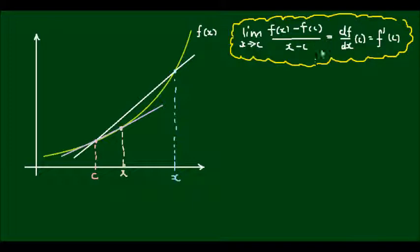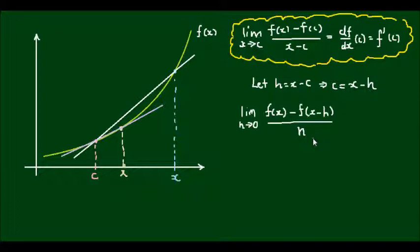I can write this in a generalized form if I substitute h equals x minus c. So let h equal x minus c. That would imply then that c equals x minus h. And if I substitute this into the above expression, the limit will change from x to c to h to 0. So the limit as h approaches 0 of f(x) minus f(x minus h) all over h equals the derivative of the function df/dx at the point x minus h.